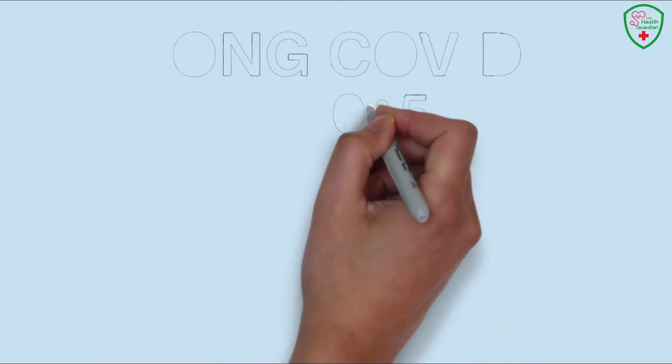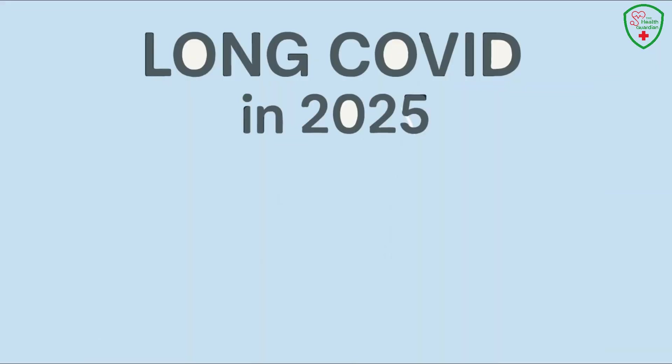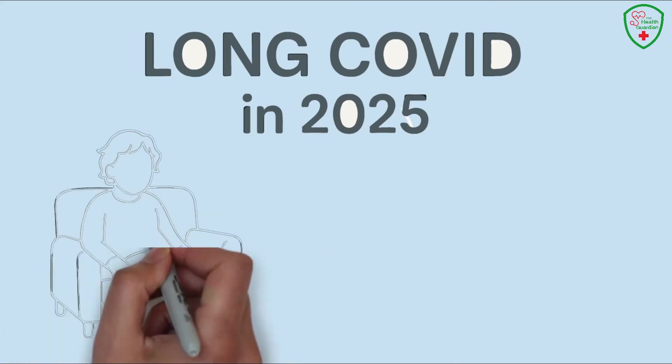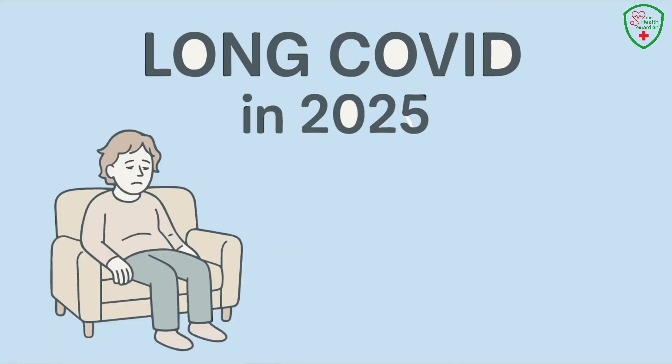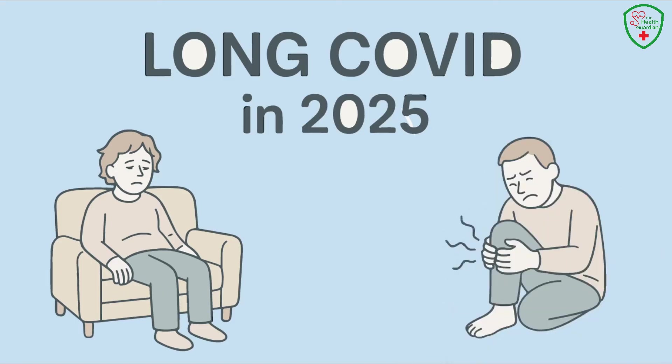Now let's get serious for a sec. Long COVID is still a big deal in 2025, even with the FLIRT variants. Even after the virus is gone, some people are left with lingering symptoms, like chronic fatigue that makes getting out of bed feel like running a marathon, or joint pain that turns every movement into a chore. It's like the virus leaves behind a shadow that just won't fade.